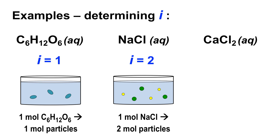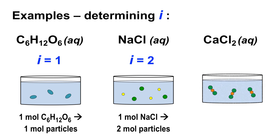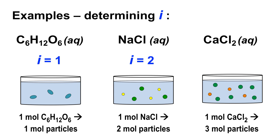Let's do one more — calcium chloride. Calcium chloride is also an ionic compound; when it dissolves in water, it dissociates into three ions: a calcium²⁺ ion and two separate chloride⁻ ions. Since one mole of calcium chloride makes three moles of particles, the Van't Hoff factor i is equal to three for calcium chloride.